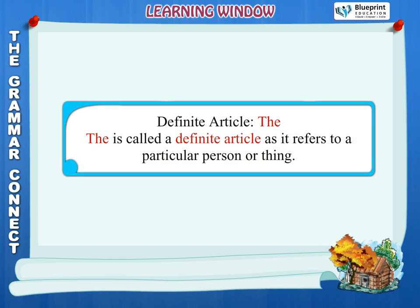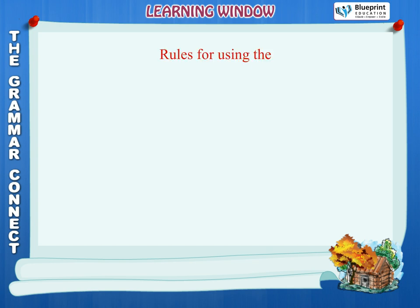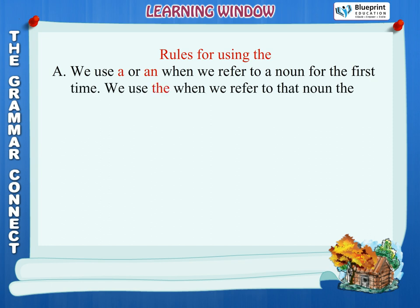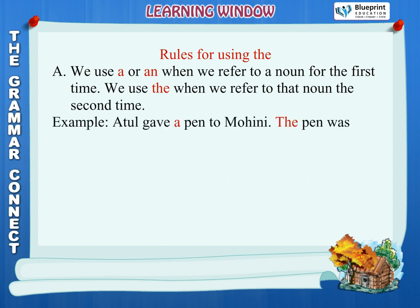Definite article: the. The is called a definite article as it refers to a particular person or thing. Rules for using the. Rule A: We use a or an when we refer to a noun for the first time. We use the when we refer to that noun the second time. Example: Atul gave a pen to Mohini. The pen was yellow in color.